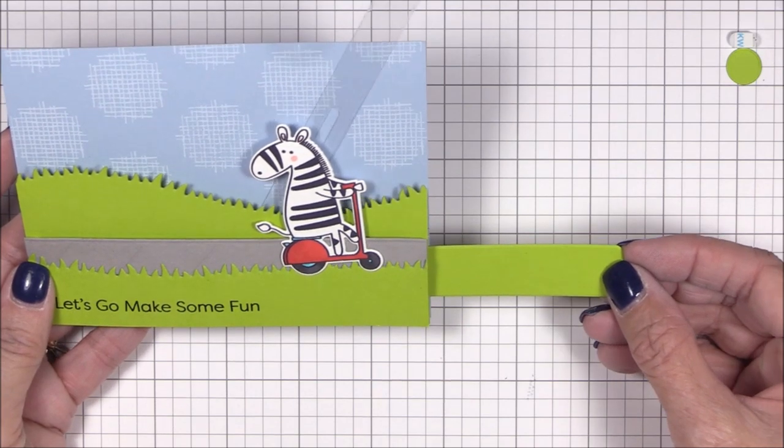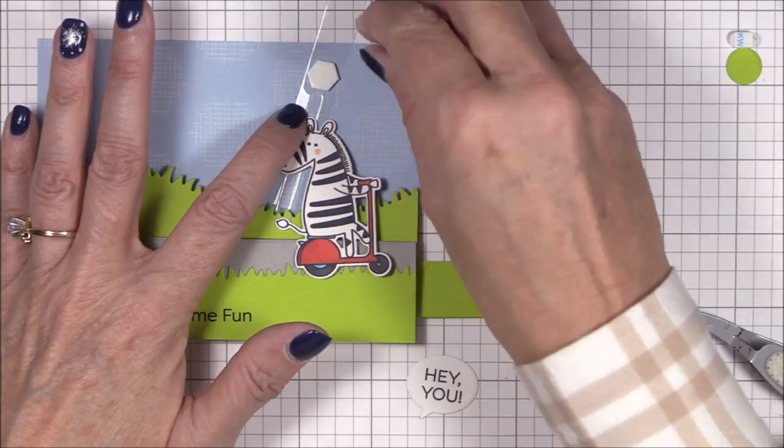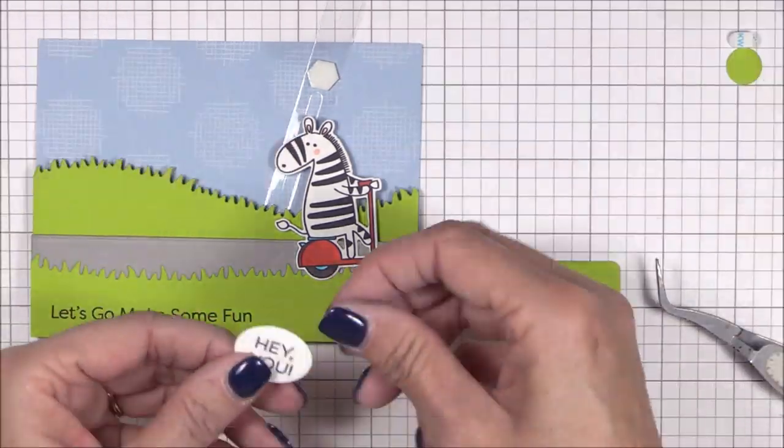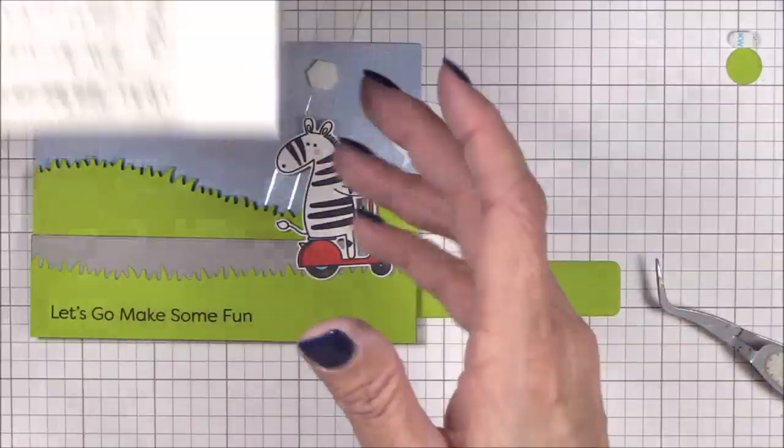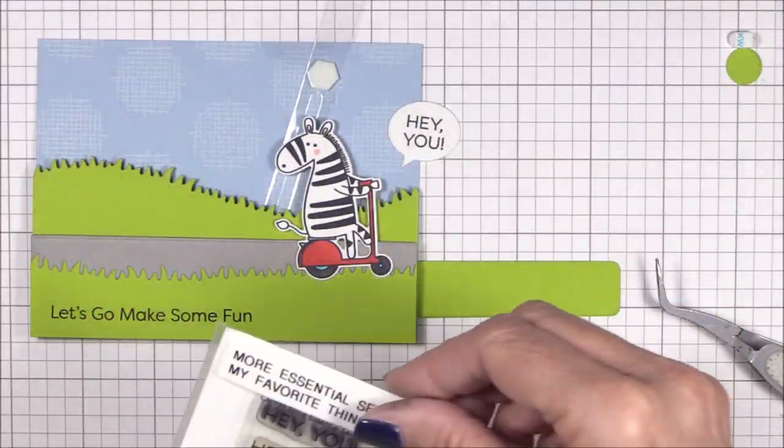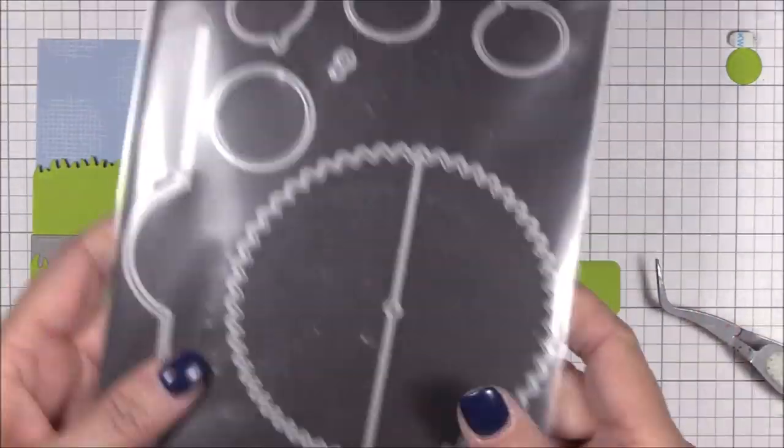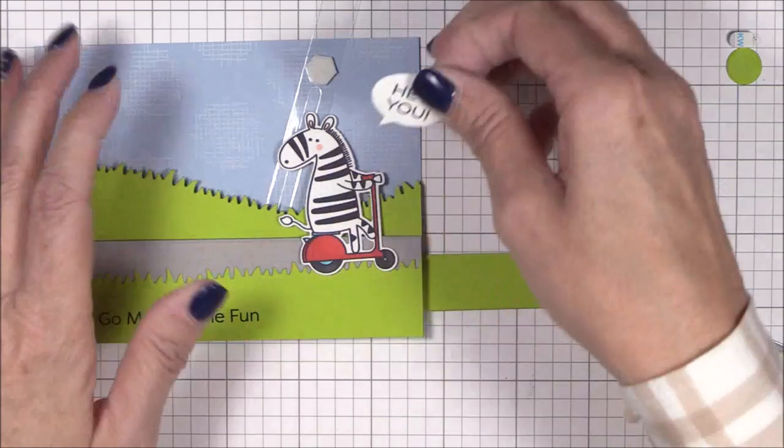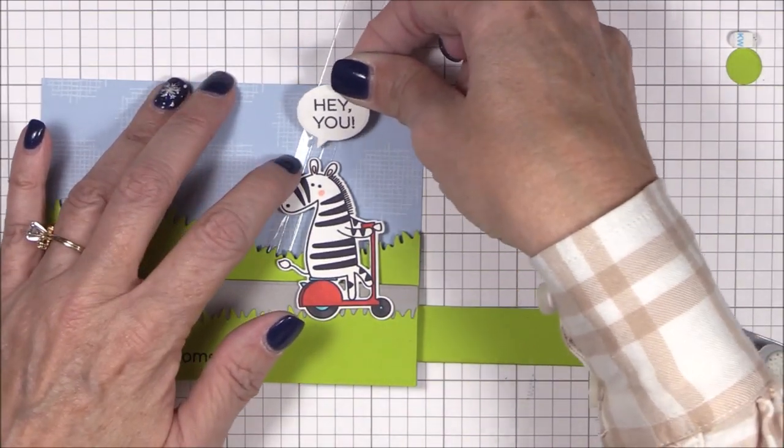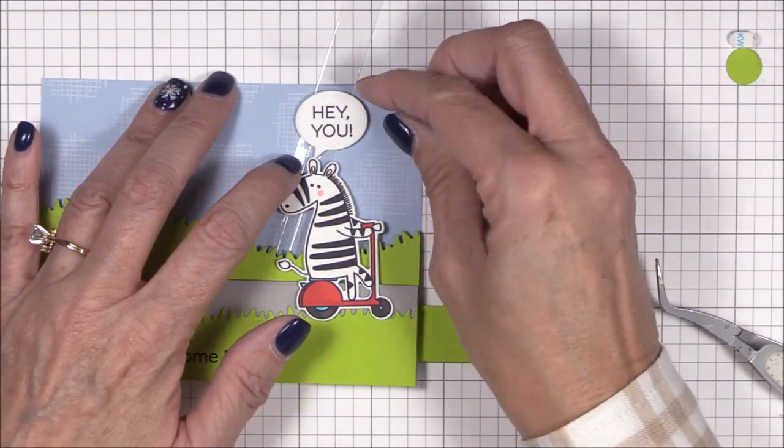Now I need to figure out the positioning of the launcher strip, which is where the speech bubble will be attached. As I pull the pull tab, I can see that the launcher strip can actually launch beyond where I want it to be. So I'll move the pull tab until the strip is located where I want it, and then I'll adhere the speech bubble with a foam square adhered to the strip near the end of the track.